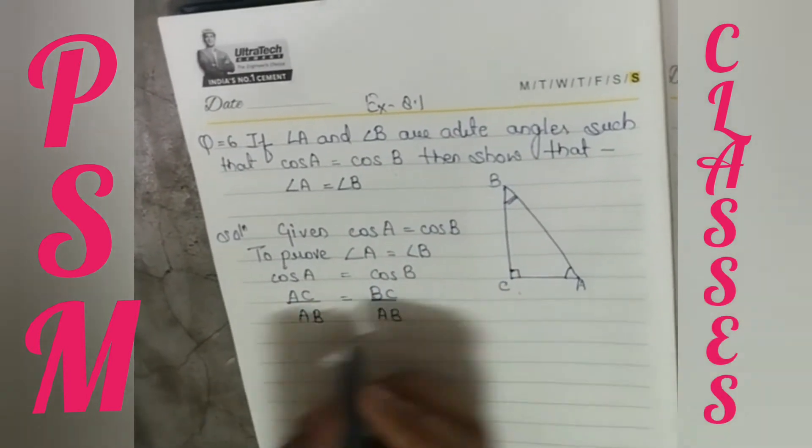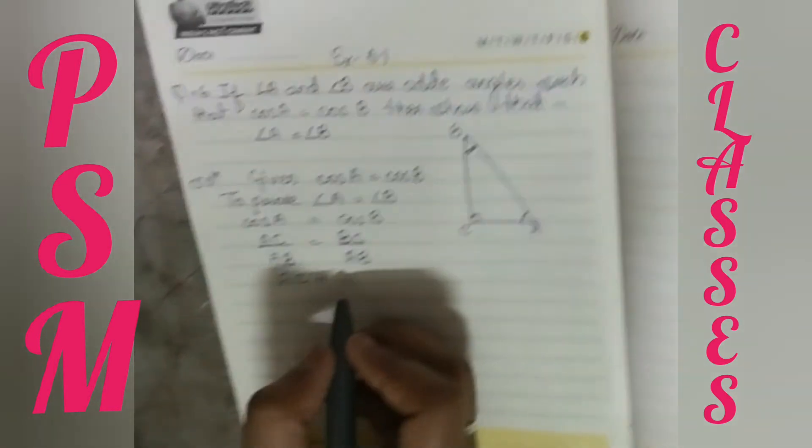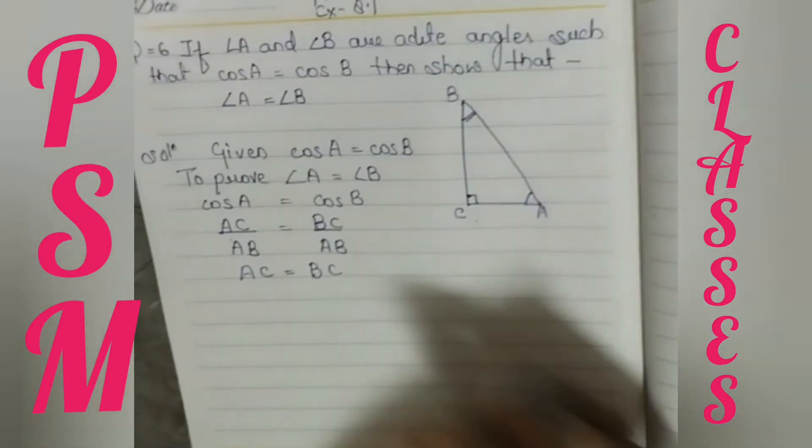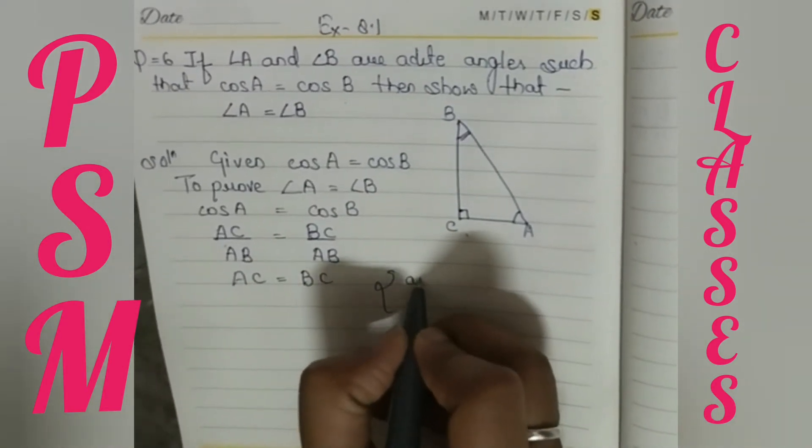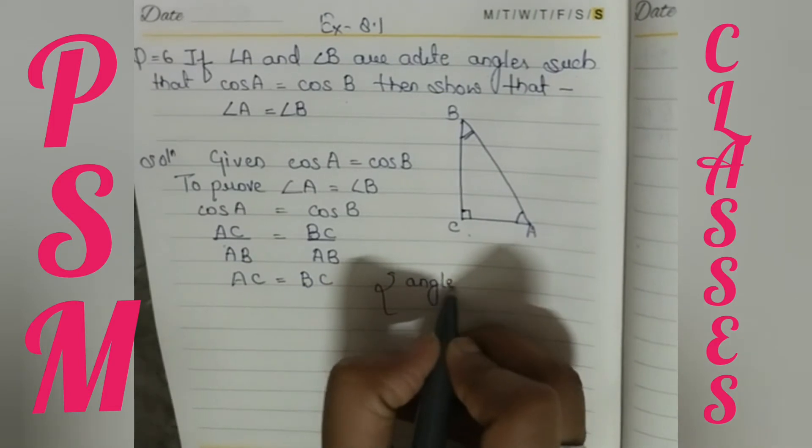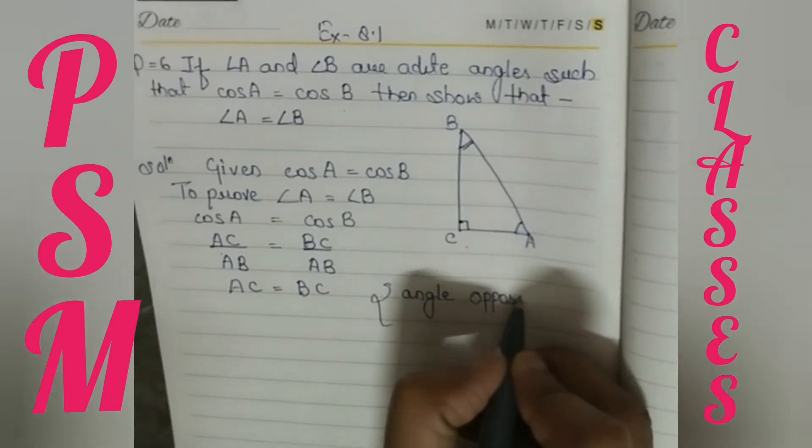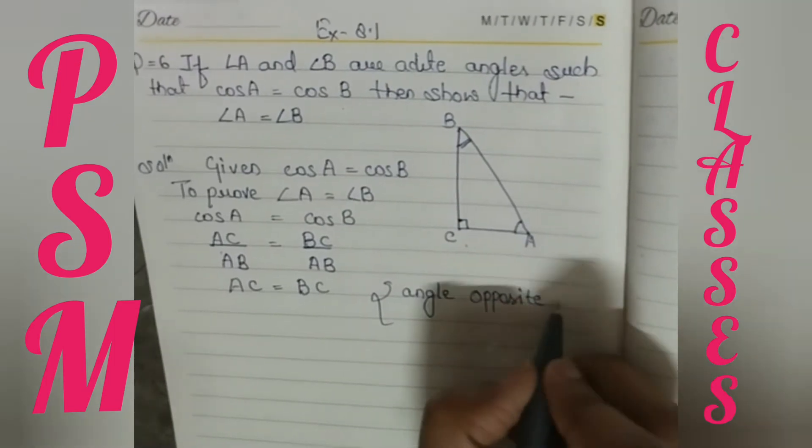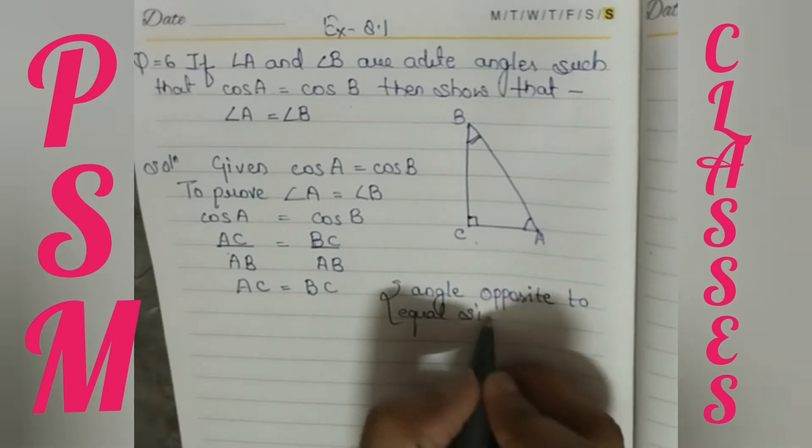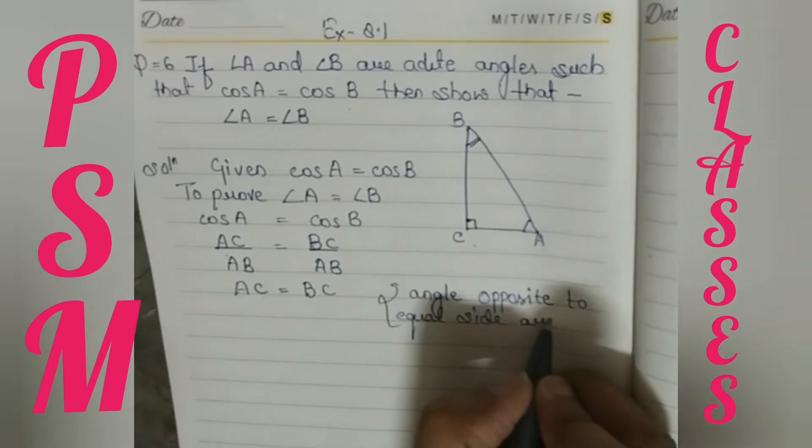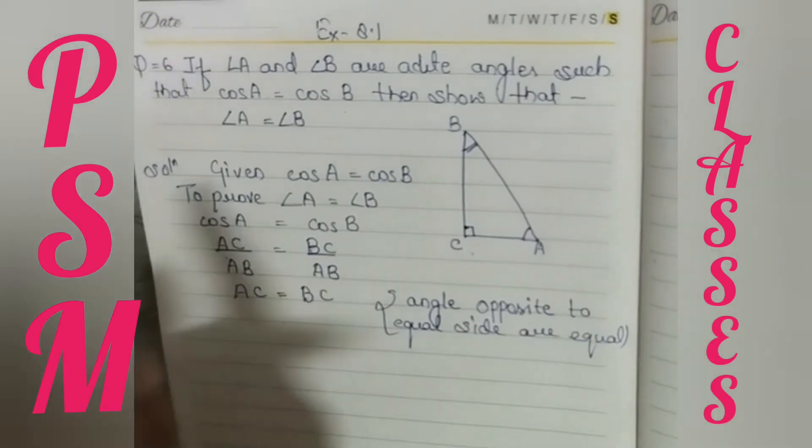Now we can see that from this equation, we have to find what is AC is equal to BC. So now we have to use a formula. If we know that angle opposite to equal sides are equal, AC is equal to BC. Now we have to prove that the angle is equal to AC.